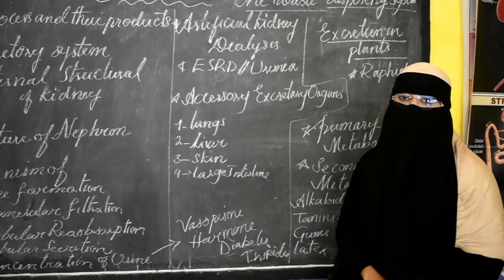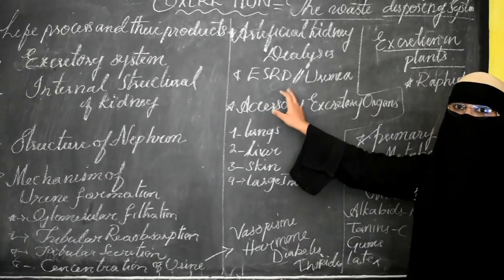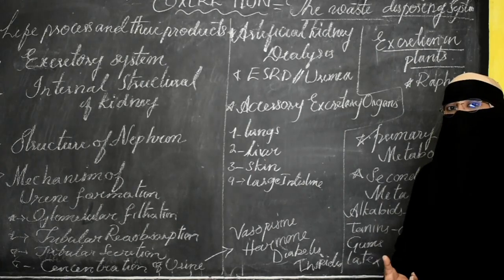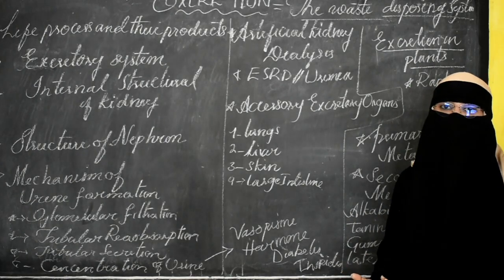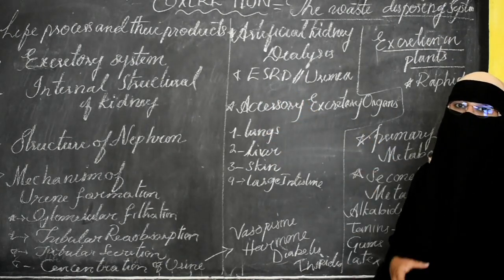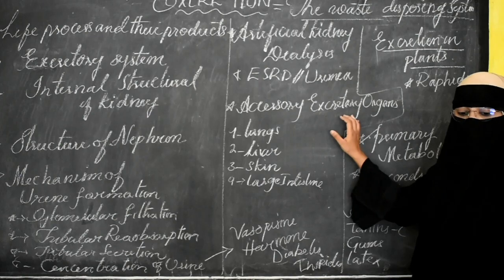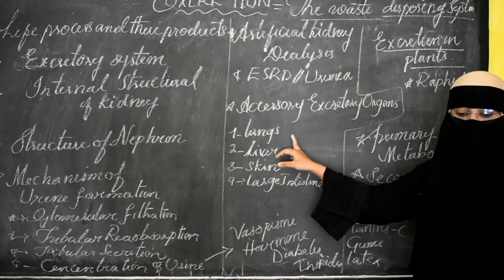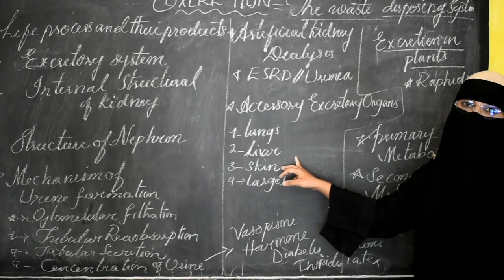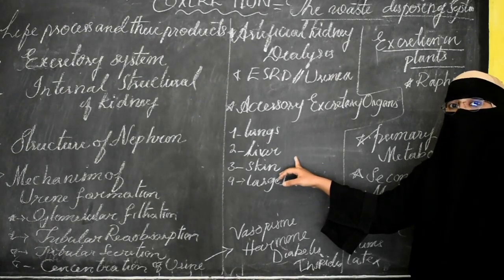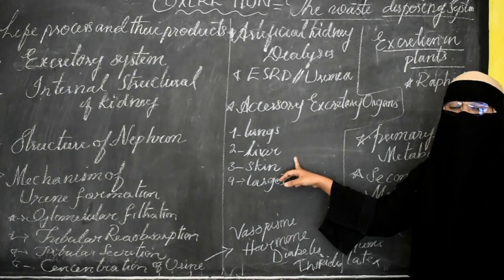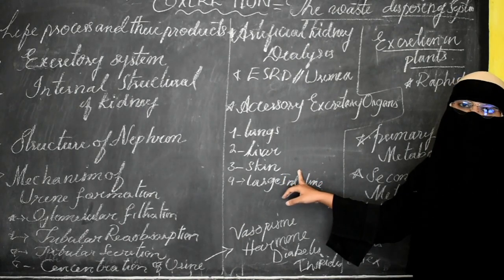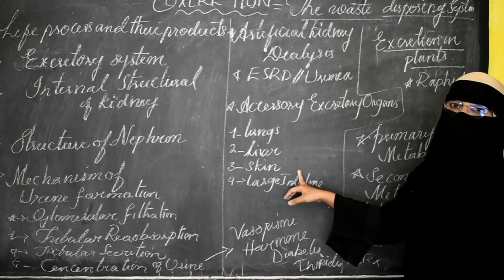ESRD — End Stage Renal Disease — is when fatal components like nitrogenous byproducts accumulate in the body, causing swelling and damage, with both kidneys failing to filter blood. Accessory excretory organs include lungs, liver, skin, and large intestine. The lungs remove carbon dioxide; the liver removes bilirubin and urochrome, since the liver is the graveyard for dead RBCs where hemoglobin breaks down into bile pigments. The skin eliminates sebum, sweat, oil through sebaceous glands and sweat glands.